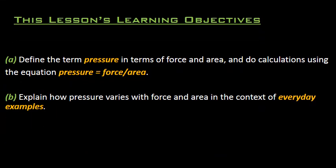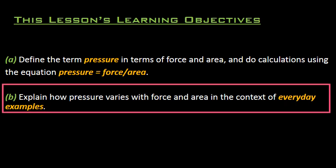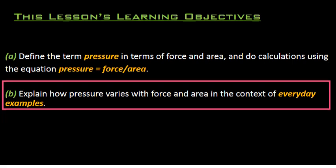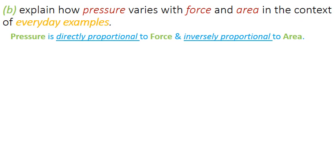Now is the time to look at our second learning outcome which is learning objective B that explain how pressure varies with force and area in context of everyday examples. In very simple words that how pressure varies with force and area this is one line which explains the whole idea. And that is that pressure is directly proportional to force. This half part or half statement is pretty simple and is quite clear that if we apply high amount of force we get high amount of pressure and vice versa. But the second part is slightly trickier and that's where we need everyday examples to understand the concept. That pressure is inversely proportional to area. What does that mean? Let's have a look.